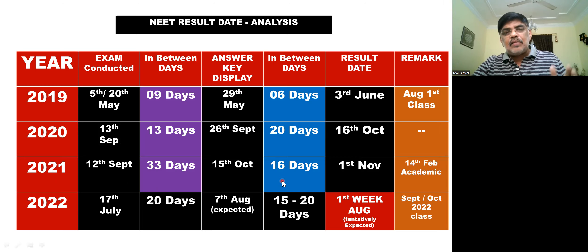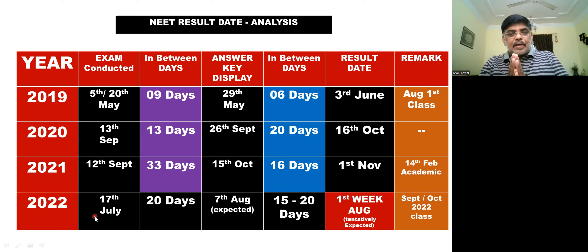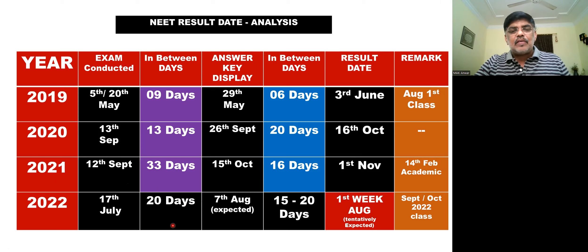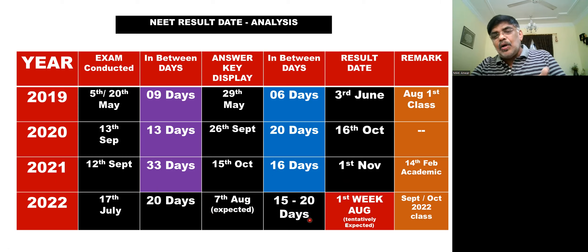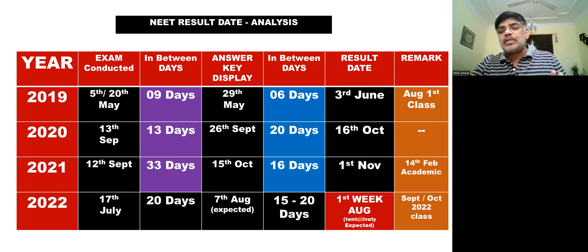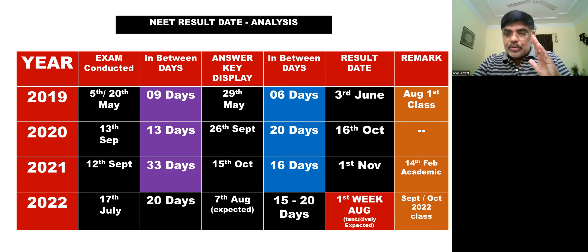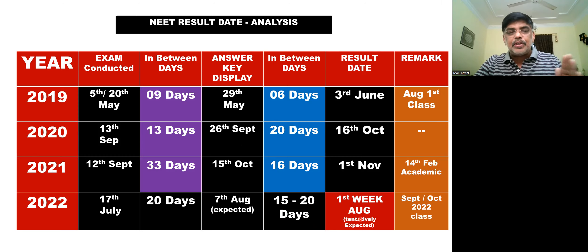The answer key was released in 16 days, and in 2020 the exam result was set in 17 days. So we can expect the answer key around 7th August. After that, you will get the result in 15 to 20 days — likely in the first week of September or October. In 2022, they have to start the batch, which was already started by 14th September in 2021. Now it will likely happen in September and October.